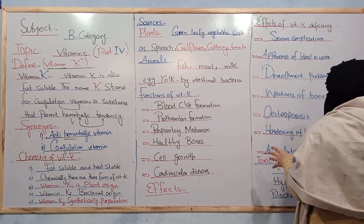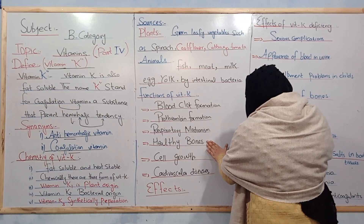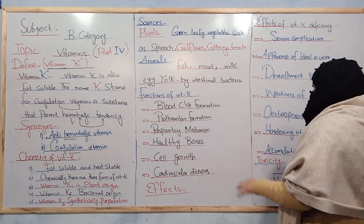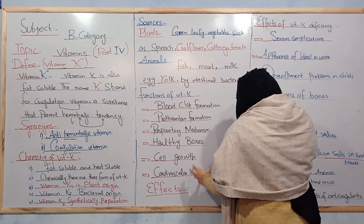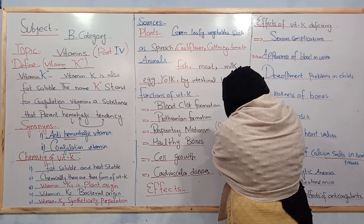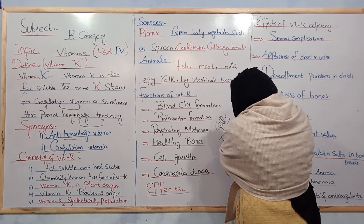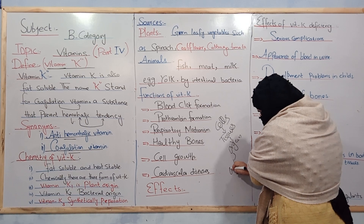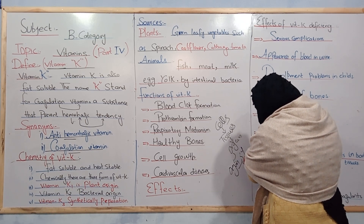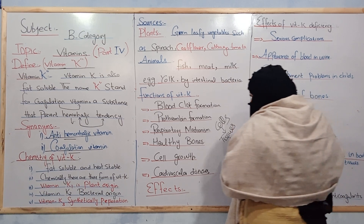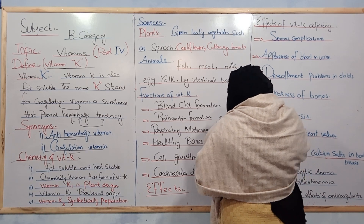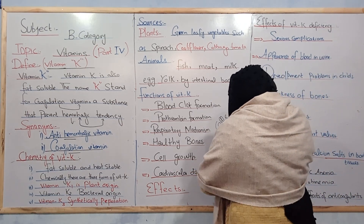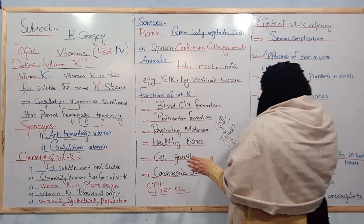Vitamin K also plays an important role in cell growth. Our body is made of different types of cells; cells make up tissues, tissues make up organs, and organs form organ systems. Vitamin K supports this growth. Furthermore, vitamin K helps prevent cardiovascular disease.